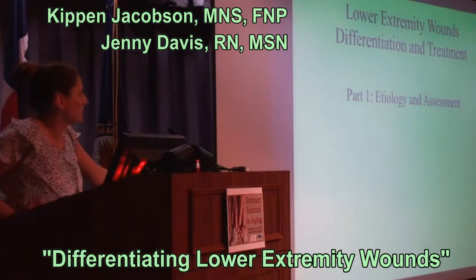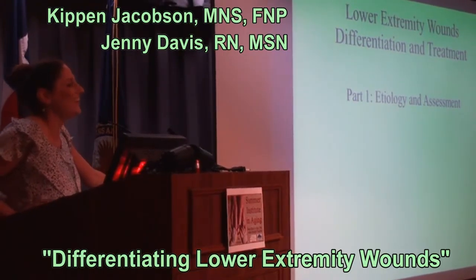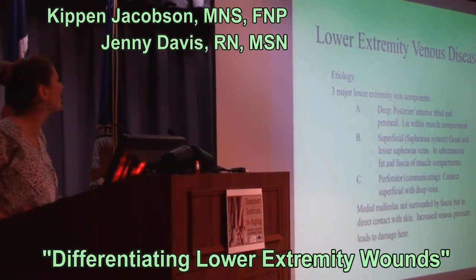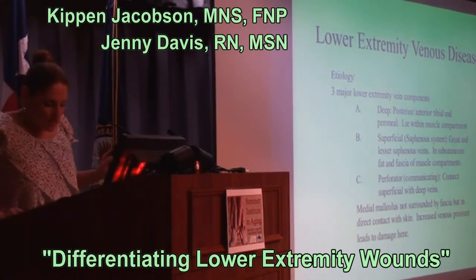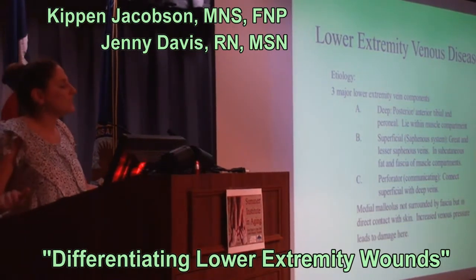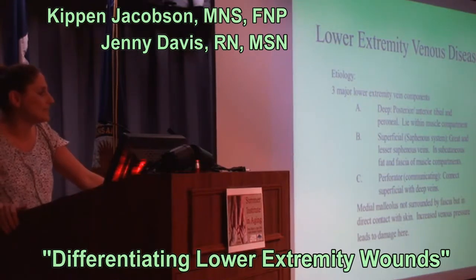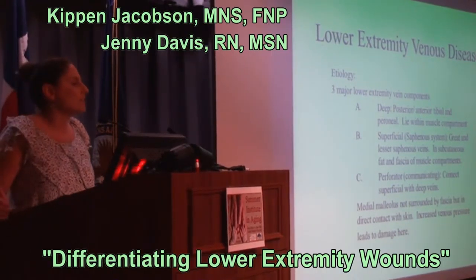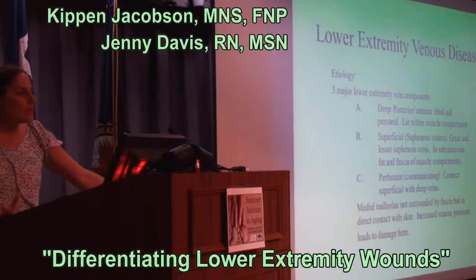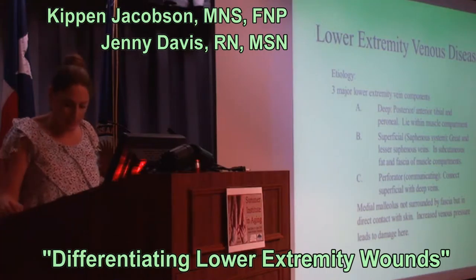Part one will be discussing etiology and assessment. Let's first discuss the normal patterns of venous blood flow. There's the deep system, which consists of the femoral, popliteal, and tibial veins. These veins lie within the muscle compartment and they are milked by the calf muscle contraction. This is a very high pressure system.